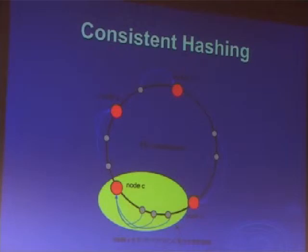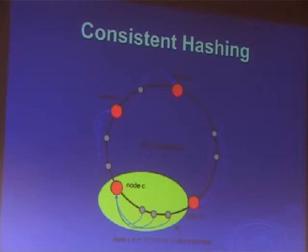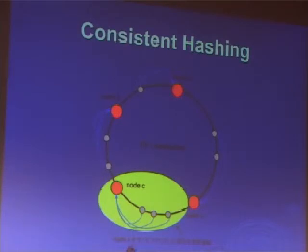It uses a technique called consistent hashing. To handle the mapping, it creates a ring of real numbers going from zero to one. All the machines in the system map to a point in this ring. Then all the keys written into the system go through a hash function and map onto this ring. As you can see in the green highlighted area, node C is responsible for all the keys that map on that segment of the ring from node C to node B, and likewise node B is responsible for those, and so on.